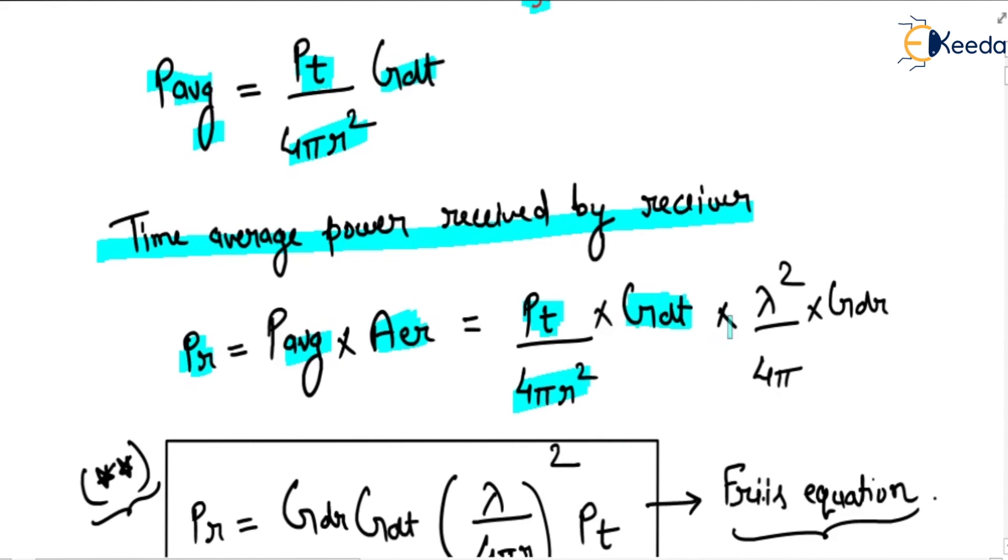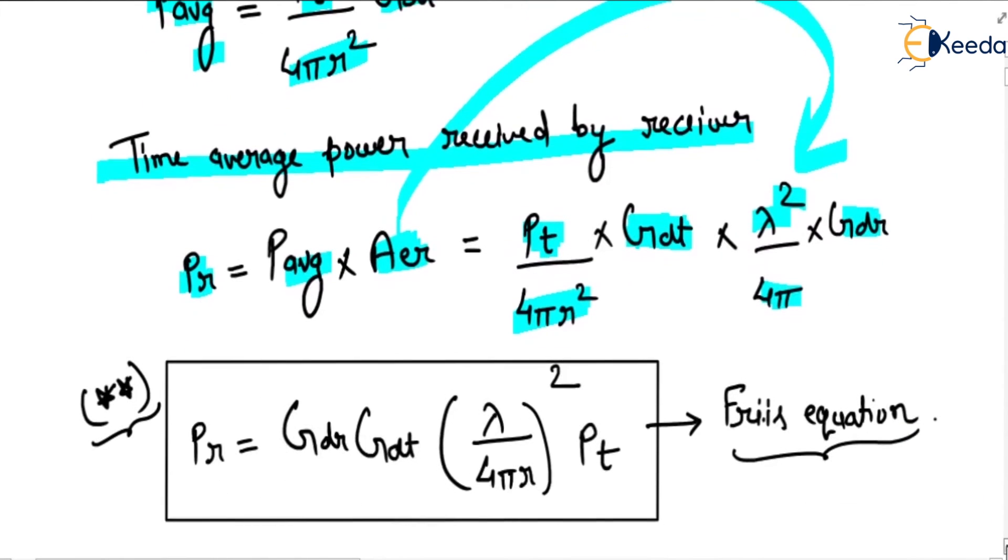times GDT times the effective area of the receiver, which equals λ²/(4π) × GDR. From here we get the received power: PR = (GDR × GDT × (λ/4πr)²) × PT